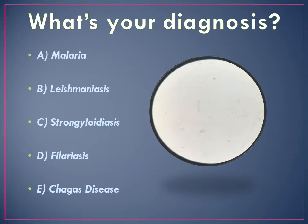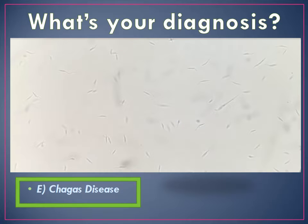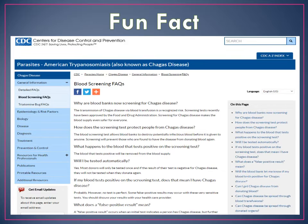So what is your diagnosis? Is it A, malaria; B, Leishmaniasis; C, Strongyloidiasis; D, Filariasis; or E, Chagas disease? This is how the parasite looked under the microscope. Yes, that's exactly it — it's Chagas disease. This parasite is also known as Trypanosoma cruzi. As a fun fact, this is a screenshot from the CDC website stating that blood products donated in an endemic region for Chagas disease, such as Colombia, will be automatically screened for this parasite. Good to know — food for thought.